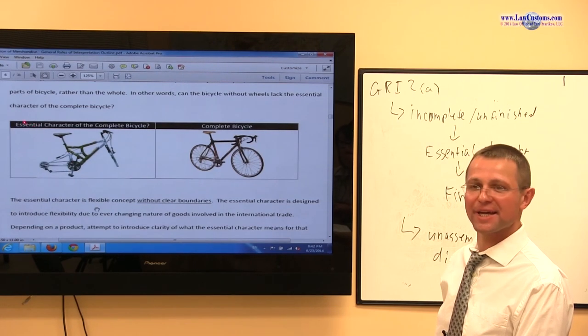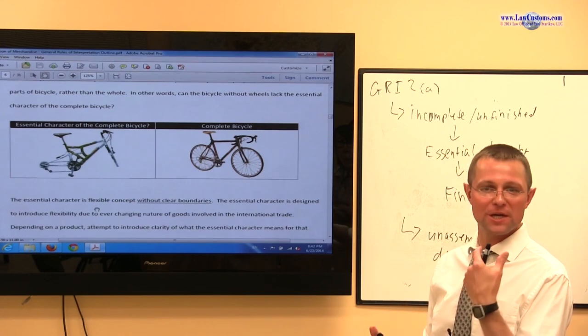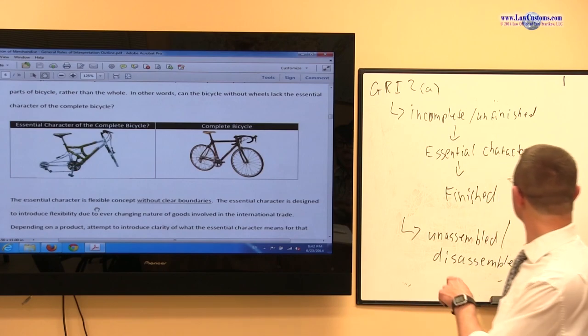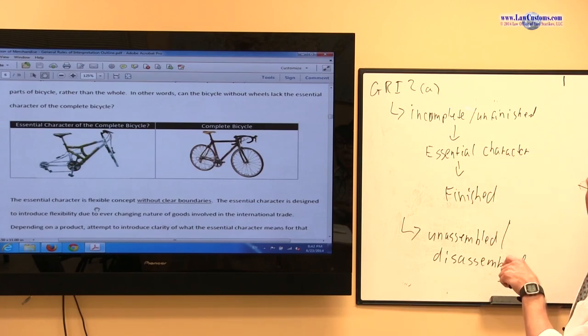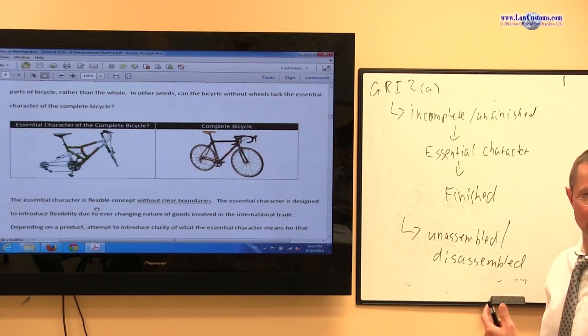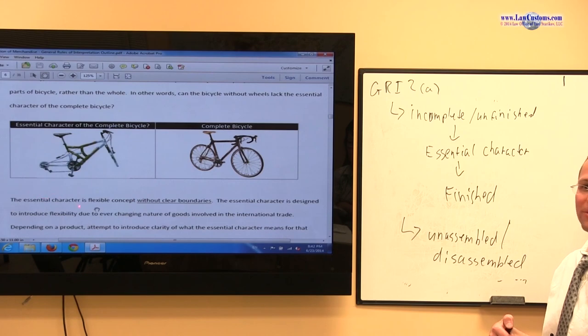So, most likely, my first feeling is yes, I would bring it in and assign a number as even though it's incomplete, it has essential character of finished bicycle. So, this looks more like this than parts. Now, picture this. I start taking... I took the chain off. Will it still be a complete bicycle? Okay.